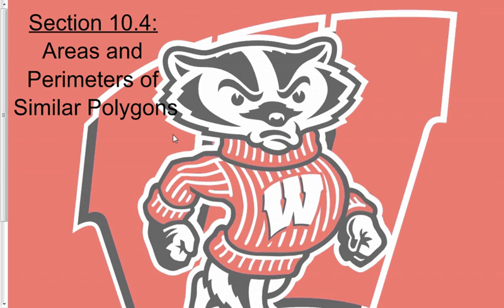Continuing with chapter 10 on area and perimeter of polygons, we're going to talk about area and perimeters of similar polygons in this section. We've done a whole unit on similar polygons and how they have a common scale factor between them. With similar polygons, the size changes but the shape itself doesn't change.